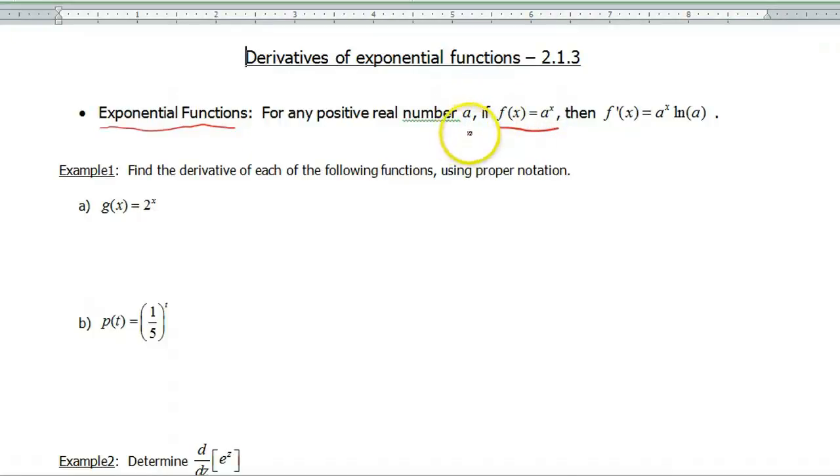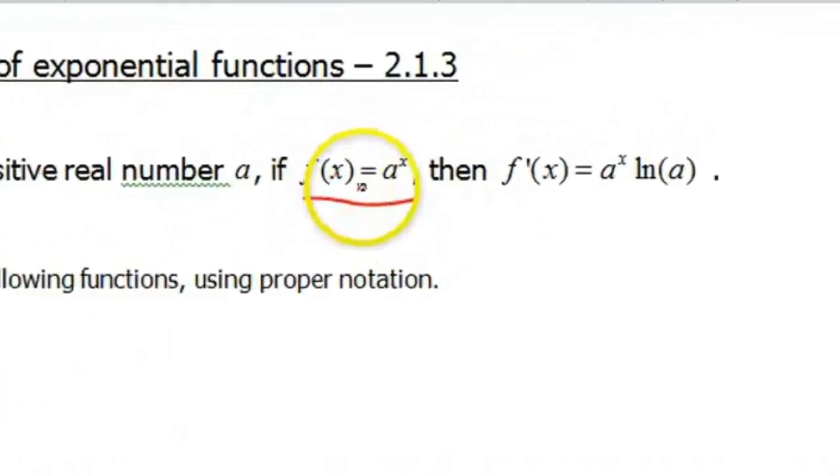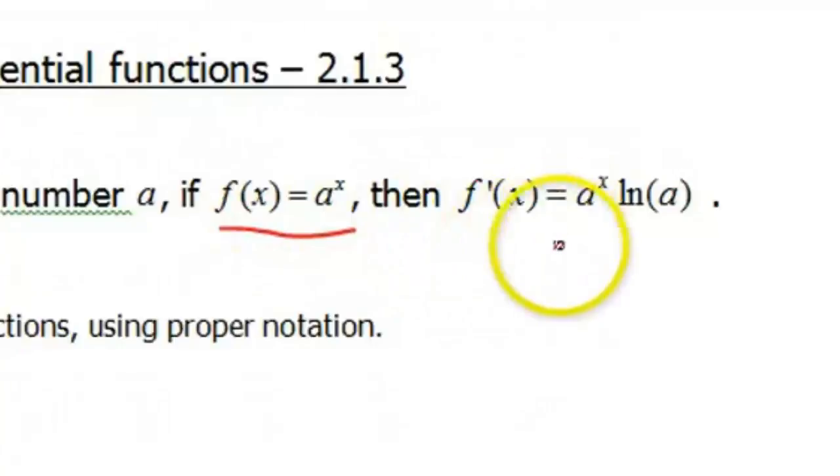And x then is your variable, which is in the exponent. If you have a function of this form, then the derivative looks like a to the x. So that comes right back at you, but then you're gonna have to multiply it by the natural log of your base, which is a.